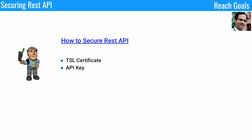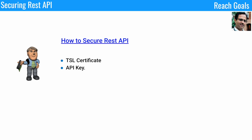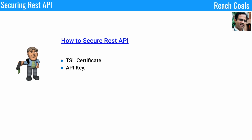The next way is to use API keys. Always send the API key while calling the REST API. This helps to track the user, block the user if not needed, enable or disable features, and helps to authenticate the API as well. You need to make sure the API keys are kept secret and not stolen.